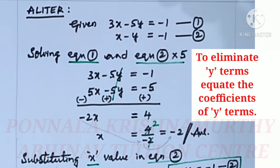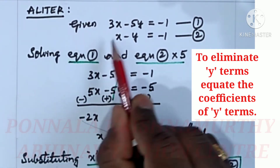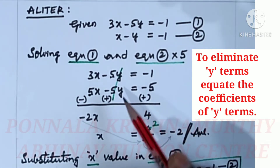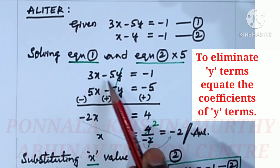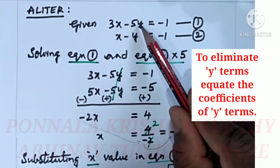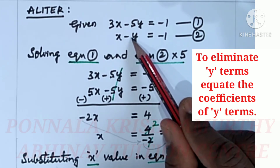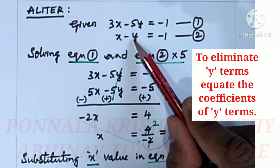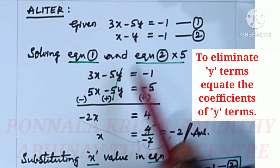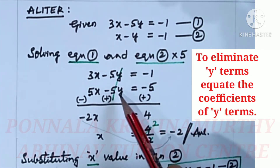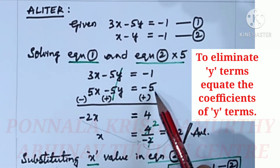Answer: x equal to minus 2 and y equal to minus 1. Now the same sum in another method. Given 3x minus 5y equal to minus 1 and x minus y equal to minus 1. Now we are cancelling the y parts. Here we have 5y, but equation 2 has only 1y, so we multiply equation 2 by 5: giving 5x minus 5y equal to minus 5.